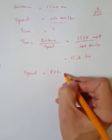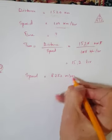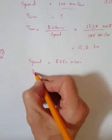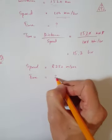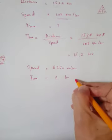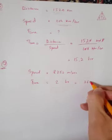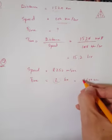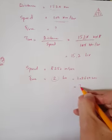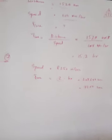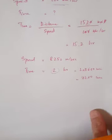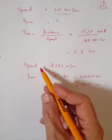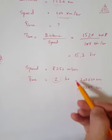How far will it travel in two hours? Two hours means we need to convert hours to seconds. We multiply by 60 twice: 2 times 60 times 60 equals 7,200 seconds.